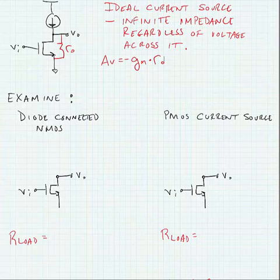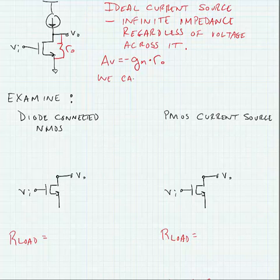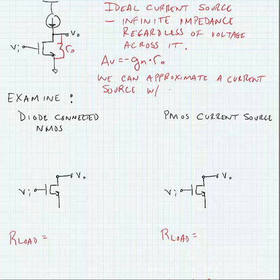Now we can approximate a current source with a transistor. And specifically for a MOS device, that would be a transistor in saturation.